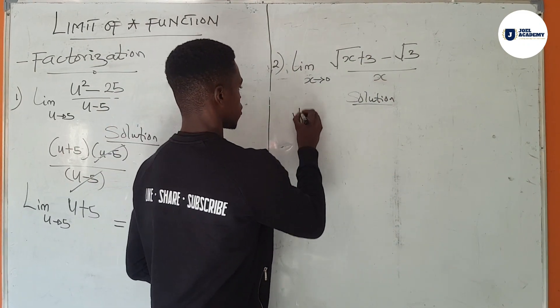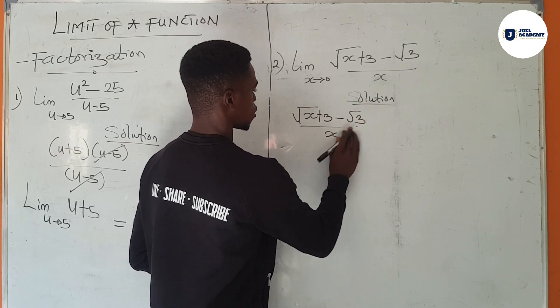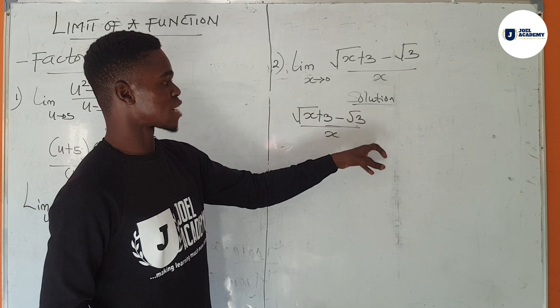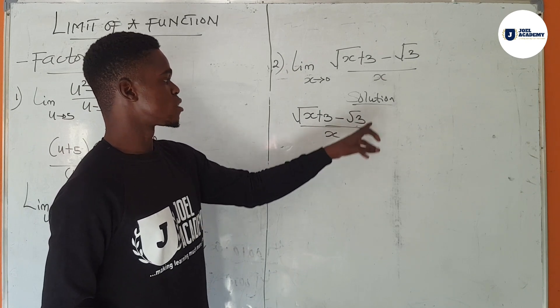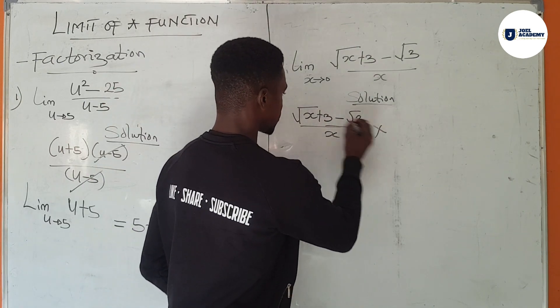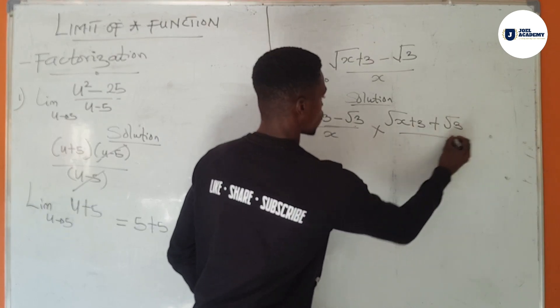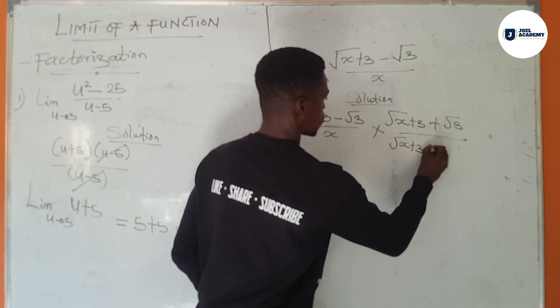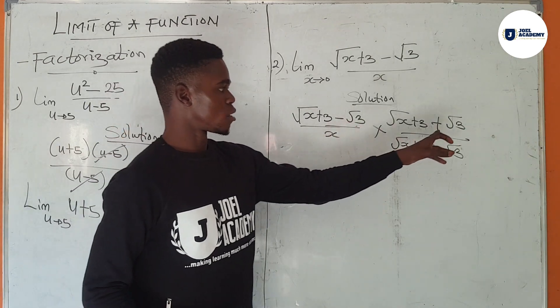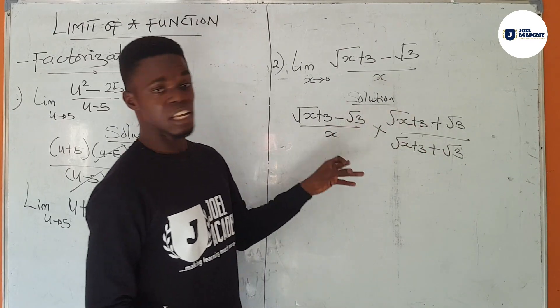In rationalization, what we do is that we multiply both sides of the fraction with the additive inverse of the numerator. So we multiply this by the square root of x plus 3 plus square root of 3 over the square root of x plus 3 plus the square root of 3. Here we have minus and the inverse is plus. So we multiply both sides of the fraction with that.